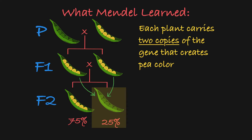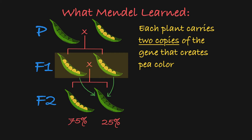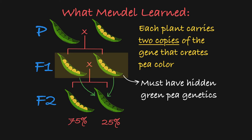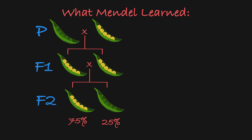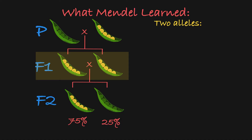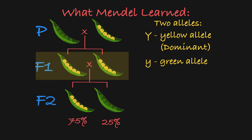So the F1 generation must have a hidden copy of the green genetics in them somewhere to pass on to the green peas in the F2 generation. Because all the F1 plants have yellow peas, Mendel also inferred that there are two alleles for pea color: a dominant allele that encodes yellow peas,